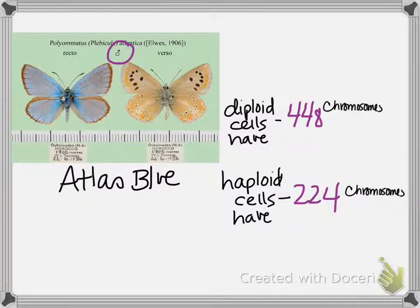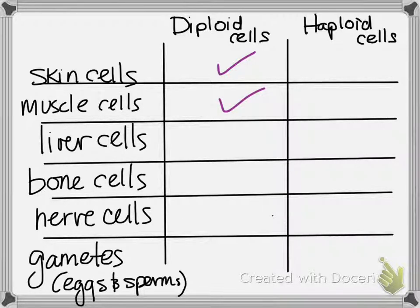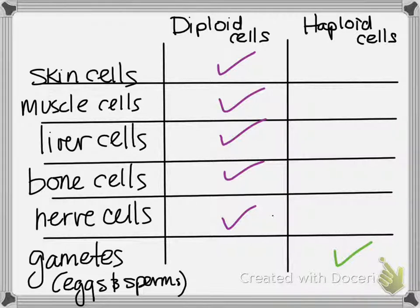Which cells in its body have 448? Which cells have 224? For any species — butterfly, spinach, humans, pineapples, carp — skin cells: diploid. Muscle cells: diploid. Liver cells: diploid. Bone cells: diploid. Nerve cells: diploid. What about gametes? Haploid. Because you can't put two diploid cells together and get a viable offspring.